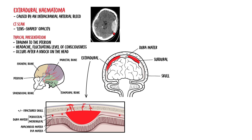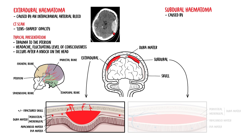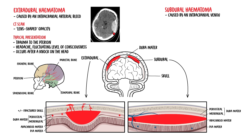A subdural hematoma is typically caused by an intracranial venous bleed, commonly due to damage of the cerebral veins. 'Sub' means below, so subdural means below the dura mater. Blood is collected underneath the dura mater and above the arachnoid mater.